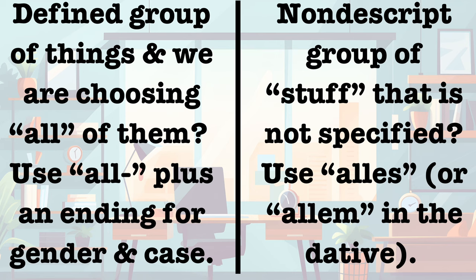To boil it down, the difference is simple. Do we have a defined group of things to which we are referring, and we are choosing all of them? If so, we need al- plus some sort of ending that fits the group or the gender of the noun. Do we have a nondescript group of stuff that we don't care to get into the specifics of? Then we need alles, or if it's dative, allem. Now to trigger the native speakers who are watching this video — do you order your Döner mit alles or mit allem? Start that argument in the comments down below.